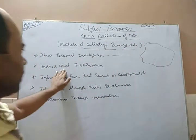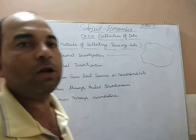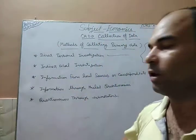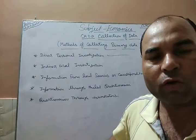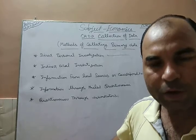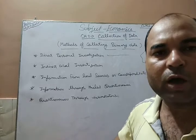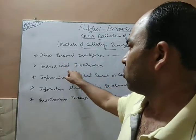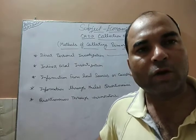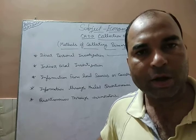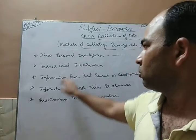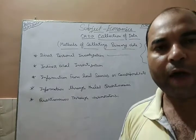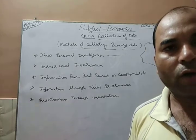The next method is indirect oral investigation. When direct personal investigation is not possible, the statistician uses indirect oral investigation. In indirect oral investigation, a questionnaire is prepared and sent to different areas — either by person or by post — and information is requested from respondents. The investigator does not need to go there directly; he collects information indirectly through a list of questions.